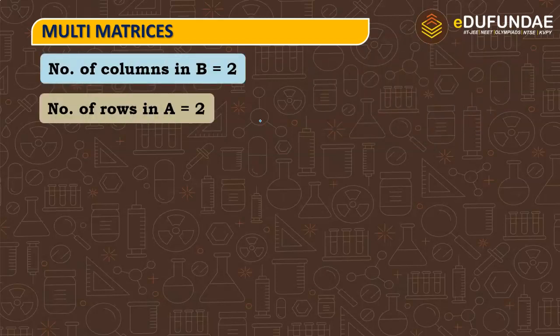So, this is number of columns in B which is 2. Similarly, number of rows A, which is 2. So, yes, BA exists. Now, BA, to find out. We will write the B matrix first.